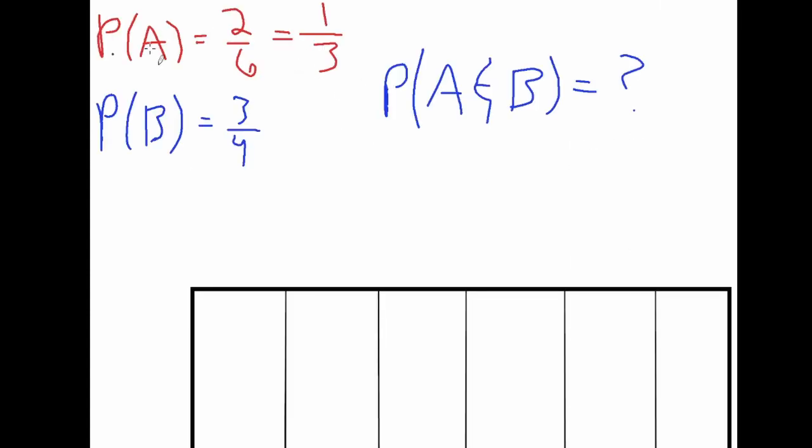So just labeling this, the probability of A occurring will of course happen two sixths of the time. But to represent that in all our possible ending states or outcomes, we can just highlight two of the following six boxes.